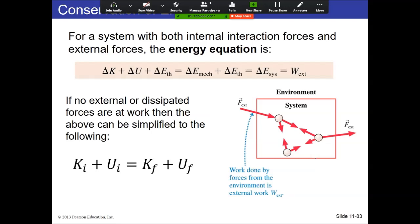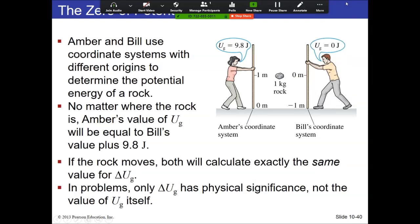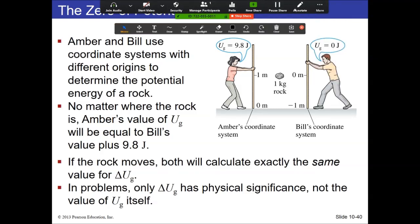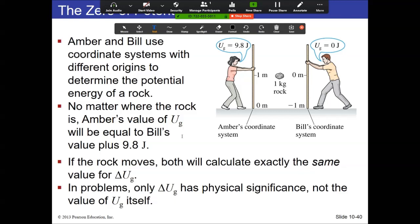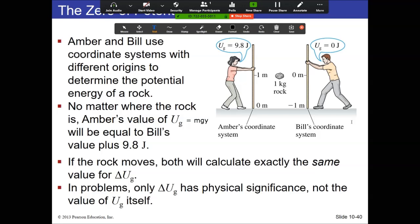The only potential energy we've really dealt with so far is gravitational potential energy, and there's something a little tricky about it — it can be zero and it can be negative, because it's mgy. UG equals mgy, where y is a distance.